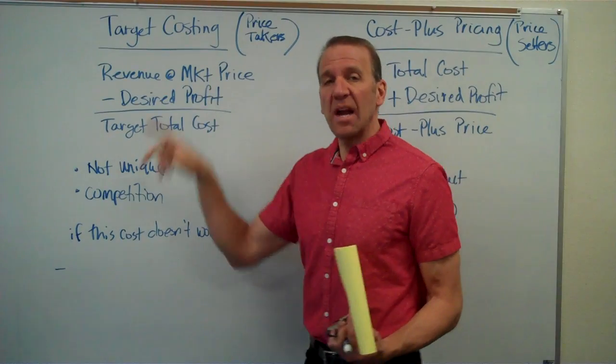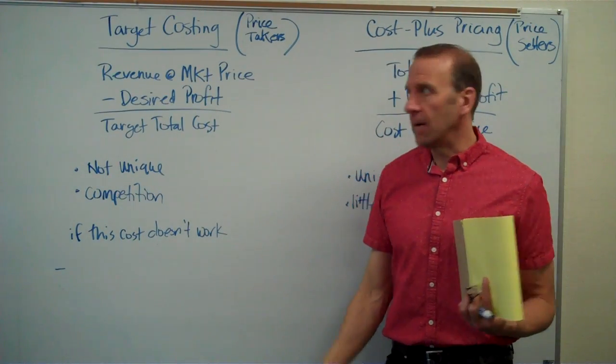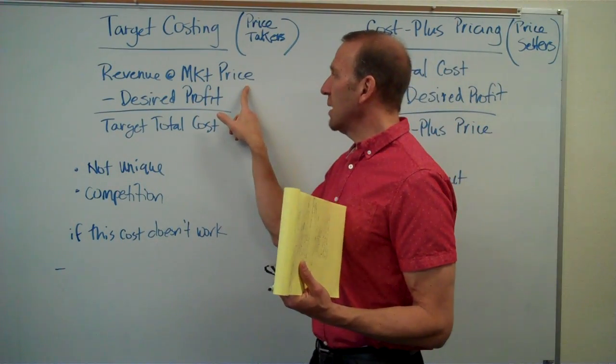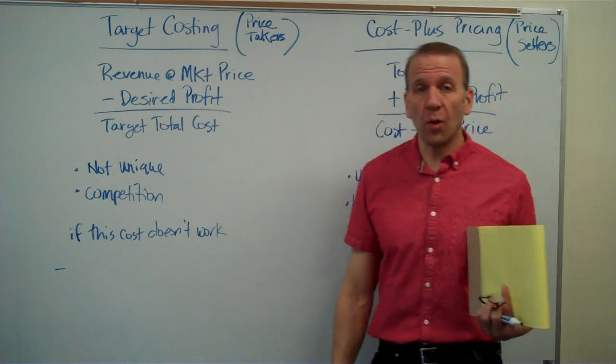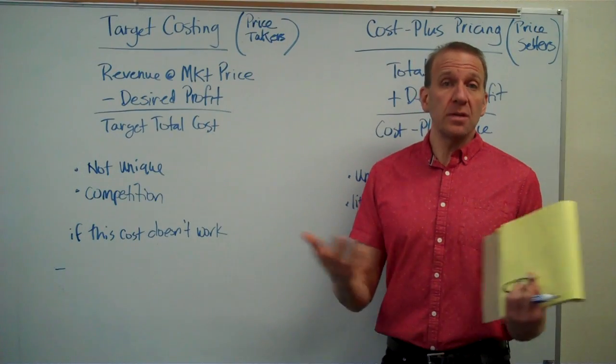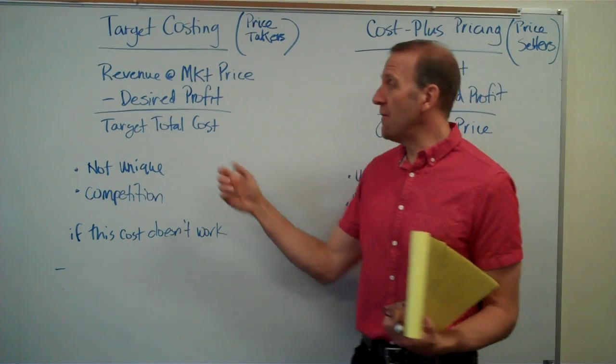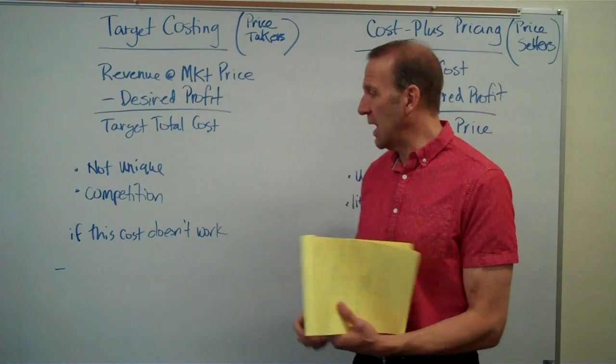So we would look at the revenue at market price because the market price would be set since it's not unique. Then we'd figure out what desired profit we want to make. So we take the market price minus our desired profit, which gives us our target total cost for this product. Now what we need to do is determine: can we manufacture this product at that cost?